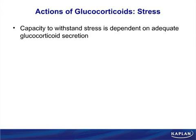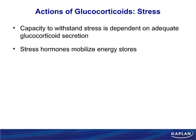Glucocorticoids — which is the same thing as saying 17-hydroxysteroids, which is the same thing as saying the production of the zona fasciculata — are stress hormones. Basically, the capacity to withstand stress is based on glucocorticoids. Glucocorticoids have the ability to raise glucose, raise free fatty acids. Stress hormones all mobilize energy stores.